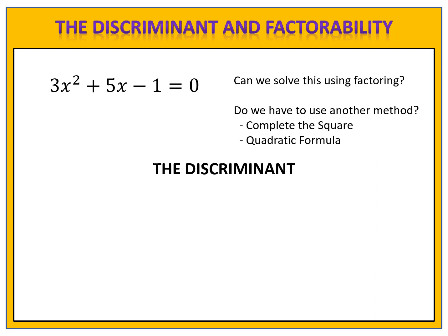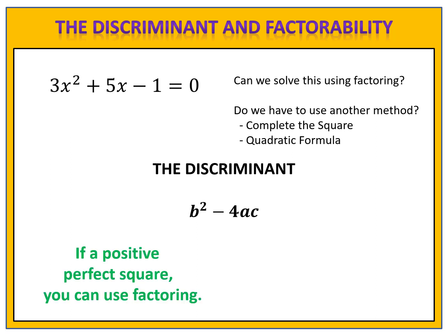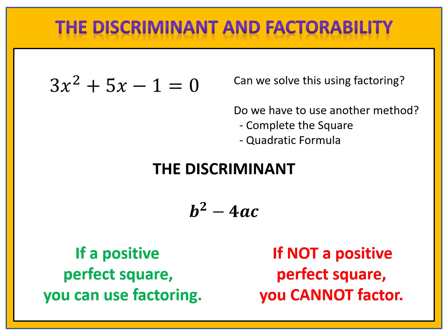We can use a tool called the discriminant. The discriminant is a simple little formula: b squared minus 4ac. If b squared minus 4ac is a positive perfect square, you can use the method of factoring. If b squared minus 4ac is not a positive perfect square, you cannot use the method of factoring and you must resort to a different method, such as completing the square or using the quadratic formula.